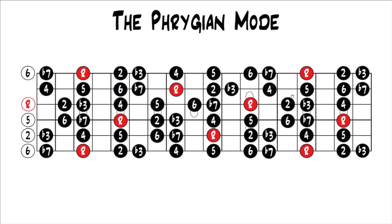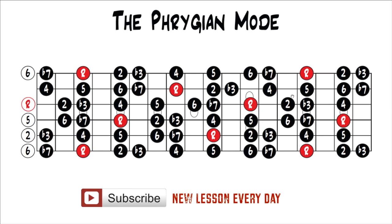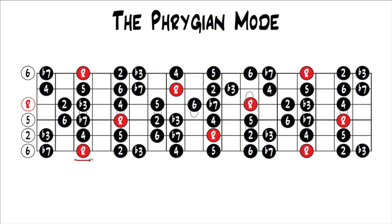We've been taking in-depth looks at each of the major scale modes. We started with the first mode, which is the Ionian mode, then the second mode, which was the Dorian mode. And now we're on the third mode, which is the Phrygian mode. We're looking at everything in parallel, meaning that everything is going to have the same root. I'm keeping it all with the G root, because it falls in a nice place on the fretboard. On your screen right now is the Dorian mode, which we went over last lesson.